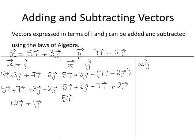Grouping like terms together, 5i minus 7i plus 3j plus 2j. 5i minus 7i is negative 2i, and plus 3j plus 2j is plus 5j.